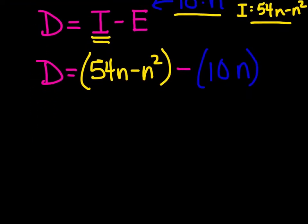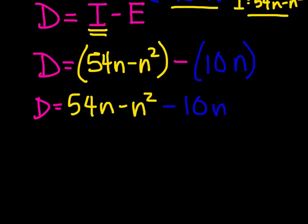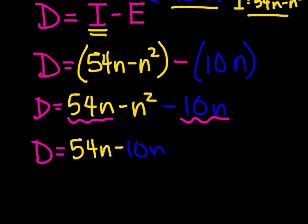If we want to, we can actually do a little bit more simplification. We can say the daily profit equals 54n minus n squared minus 10n. I see like terms here in the 54n and the negative 10n. So we can say the daily profit is 54n minus 10n minus n squared, or daily profit equals 44n minus n squared.